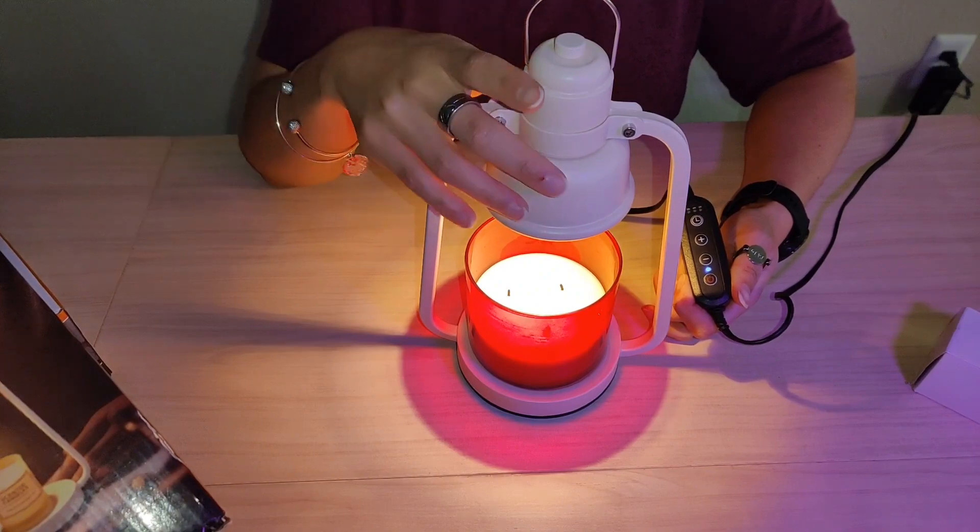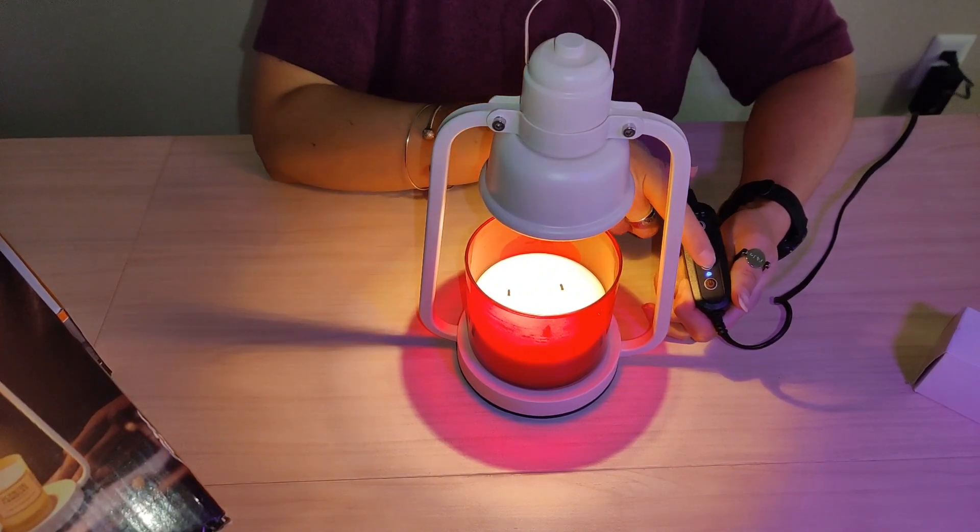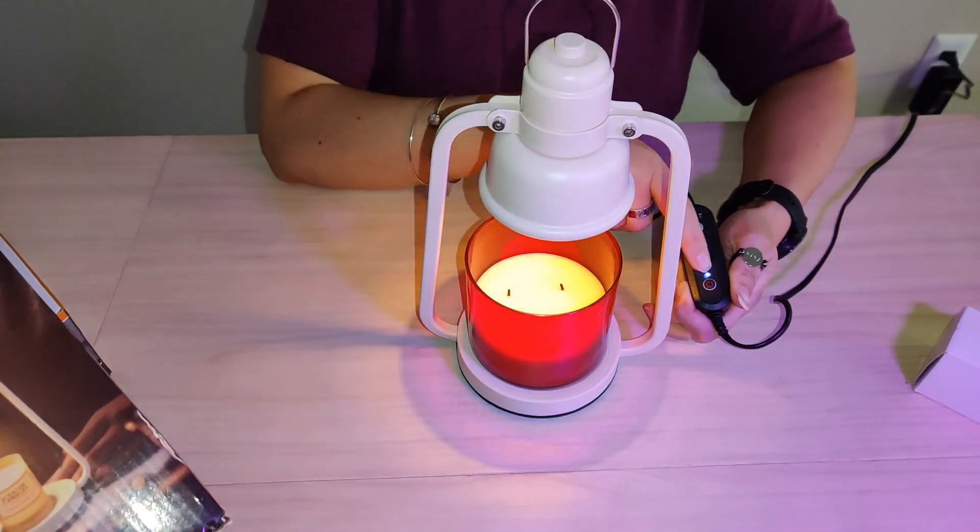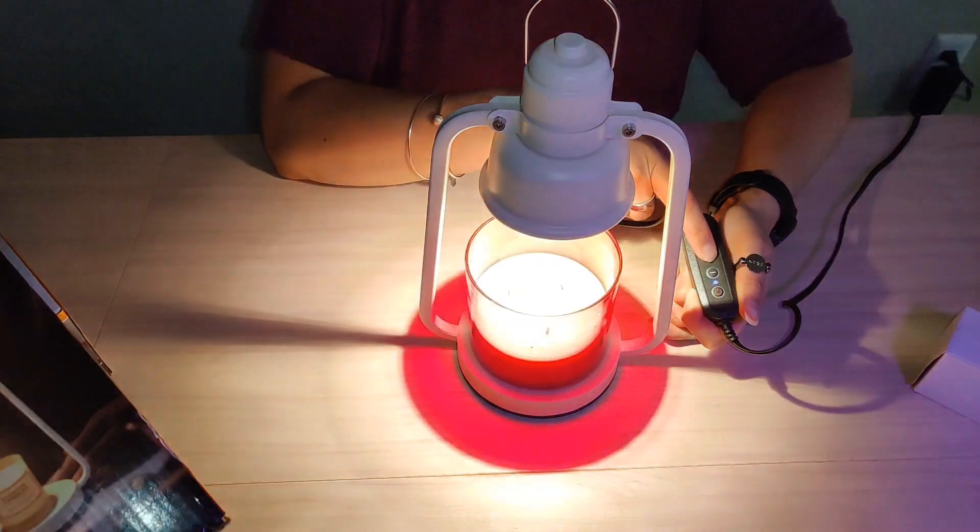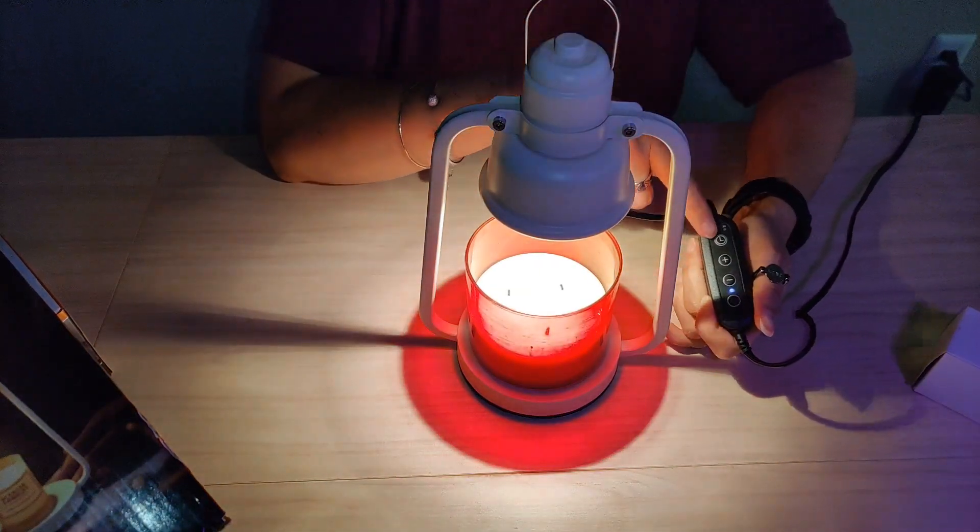Then you do have this dimmer, so you can control the brightness and the speed of the light. And as you can see, there are that many functions, and then you can go ahead and make it bright, and that is the brightest.